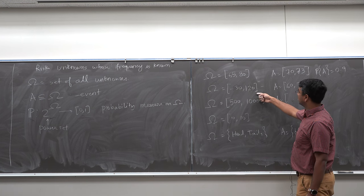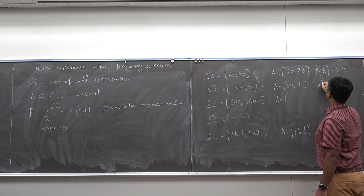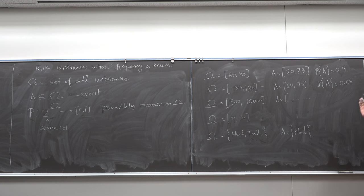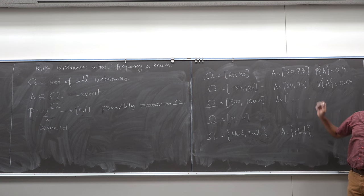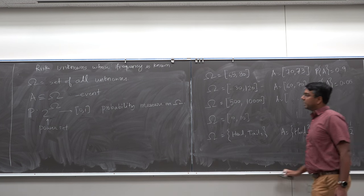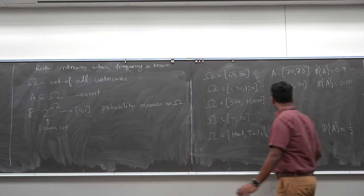For Columbus temperature, event A = [60, 70] — about 5% of the year Columbus experiences that range, so P(A) ≈ 0.05. For an unbiased coin with A = {heads}, P(A) = 1/2. So probability is basically measuring the frequency of an event occurring — omega is the set of all unknowns, an event is a subset, and probability maps a subset to a real number between 0 and 1.